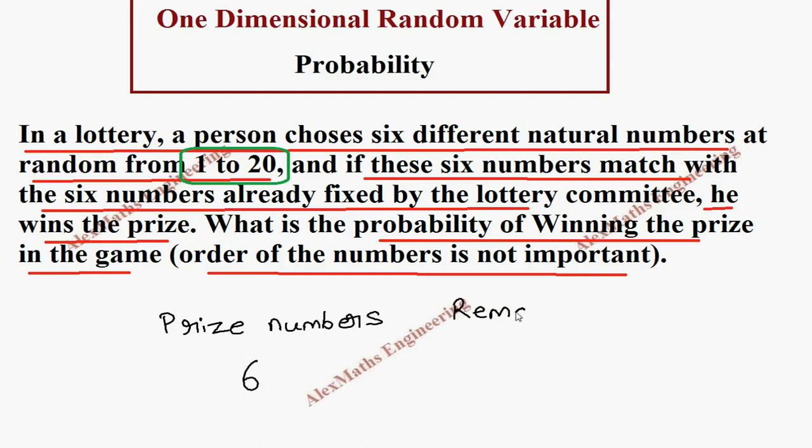Now the remaining numbers: out of 20, six numbers belong to the prize and the remaining 14 numbers. So total we write here as 20. So the entire set of numbers from 1 to 20 is categorized into two parts - the prize numbers and the remaining numbers.